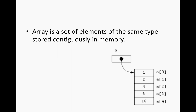For example, in the figure to the right, we have a set of one-byte integers. So if the first element is at address 100, the second element is at address 101, the third element is at address 102, and so on. So if we have to read the second element, we can directly go to that memory location 102 and read the value.